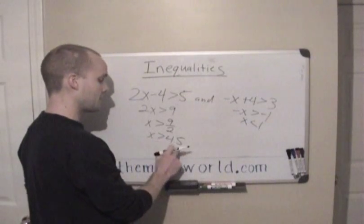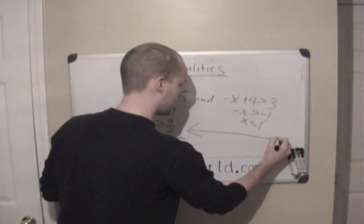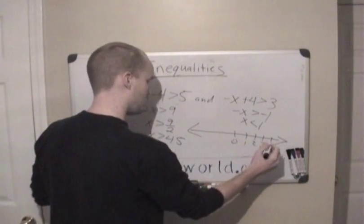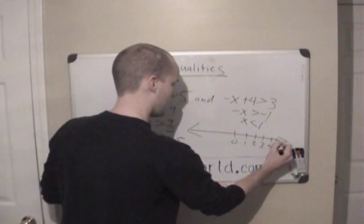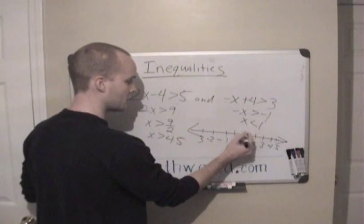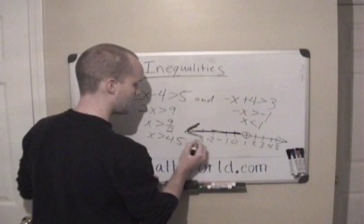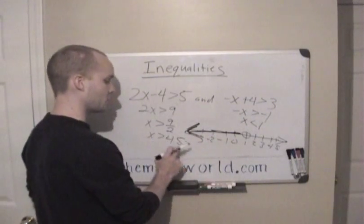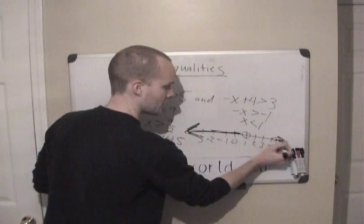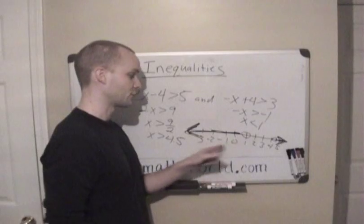So we have x is greater than 4.5 but also x is less than 1. If they ask us to graph this on a number line with points like 1, 2, 3, 4, 5 and negative 1, negative 2, negative 3: since it's less than 1, we draw an open circle at 1 and shade the arrow to the left. Since it's also greater than 4.5, we draw an open circle at 4.5 and shade the arrow to the right. This is what the graph looks like when you're given two inequalities.